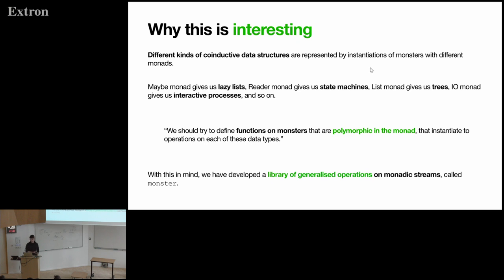So why is this interesting? Different kinds of co-inductive data structures are represented by instantiations of monsters with different monads. The maybe monad gives us lazy lists. The reader monad gives us state machines. List monad gives us trees. And the IO monad in Haskell gives us interactive processes and so on. So we thought we should try to define functions on monsters that are polymorphic in the monad that instantiate to operations on each of these different data types. So with this in mind, we developed a library of generalized operations on monadic streams called monster.